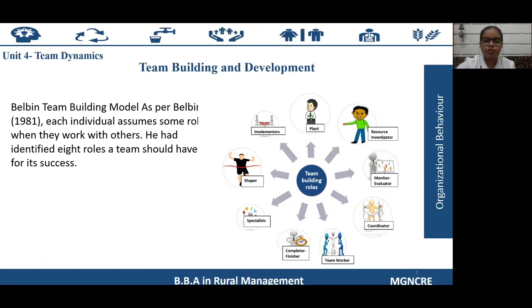Team building is a very important activity for a manager in organizations. Building a high-performance team involves choosing team members based on the goal to be achieved. Different team models exist in the literature, such as the Belbin team building model, the Thompson model, and the three-stage model of team process. Let's start with the Belbin team building model.